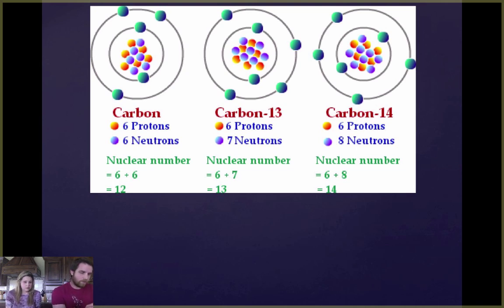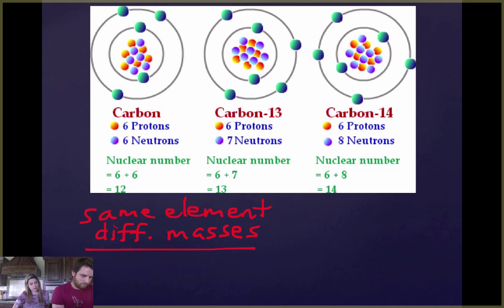So I'm going to kind of show that here. It's the same element, which you can tell because you have the same number of protons. Carbon will always have six protons no matter what. If you have seven protons, you have nitrogen, you don't have carbon anymore. So they all have six protons. You notice what's different.